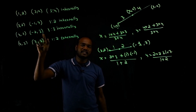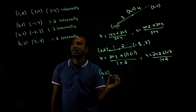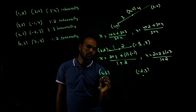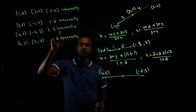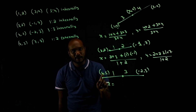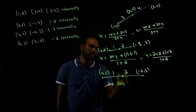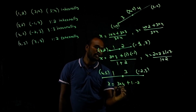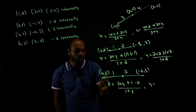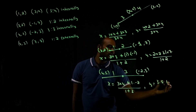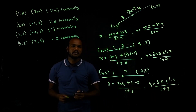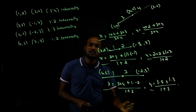Last practice question: two points 4 comma 5 and minus 2 comma 3, dividing in ratio 1 is to 3. For x: 3 into 4 plus 1 into minus 2, divided by 1 plus 3. For y: 3 into 5 plus 1 into 3, divided by 1 plus 3. Solve this to get the answer.